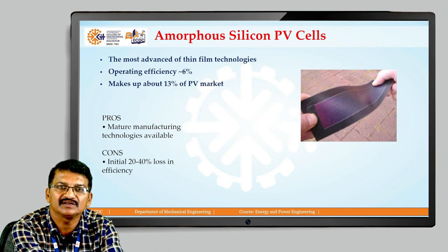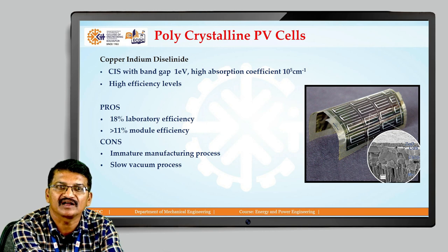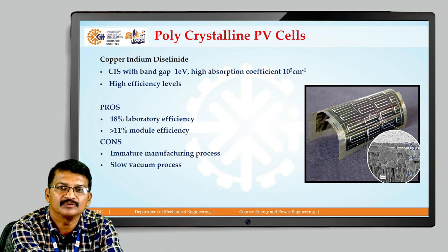Amorphous silicon PV cells are one type of thin film. The operating efficiency is very low at about 6%, making up about 13% of the PV market. Advantages include mature manufacturing technology, but a disadvantage is an initial 20 to 40% loss in efficiency. Polycrystalline thin-film PV cells — such as copper indium diselenide (CIS) — have a band gap of 1 eV, a high absorption coefficient of 10^5 cm^-1, and high efficiency levels. Advantages include 18% laboratory efficiency, with about 11% module efficiency. Disadvantages include an immature manufacturing process and slow vacuum deposition process.